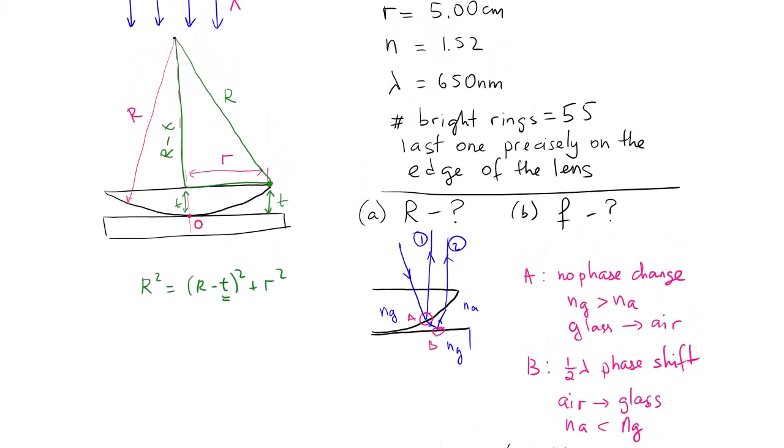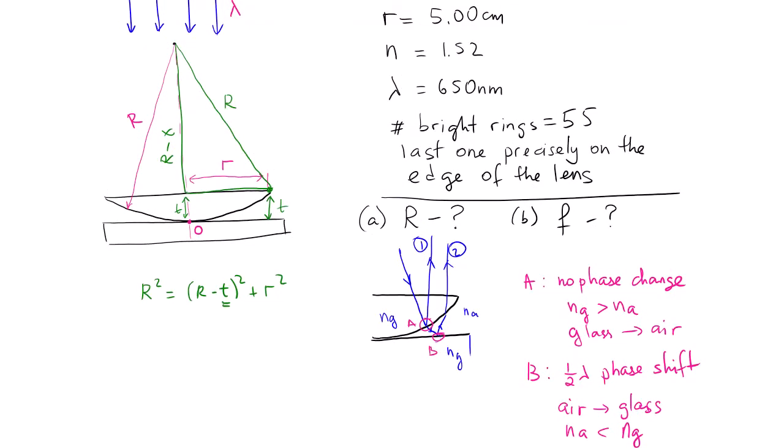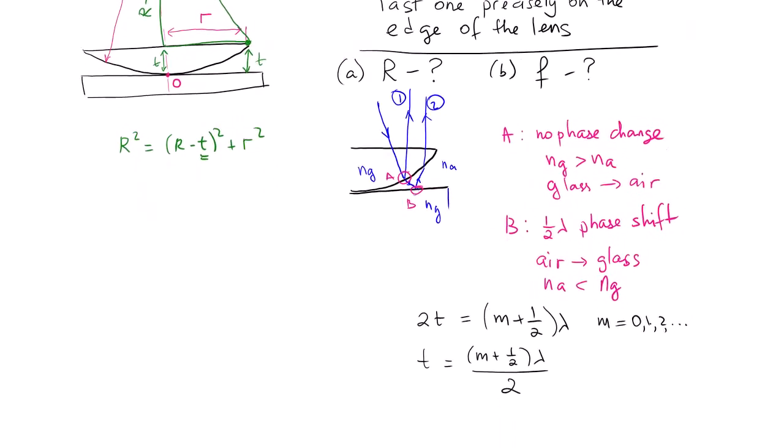We know that we have 55 rings, 55 bright rings. What does it mean? 55 bright rings that includes the one M that equals zero. That means our M should be considered to be 54 because that's zero, one, two, three, and 50, and so on, 54. That will make it 55. So be careful with that.